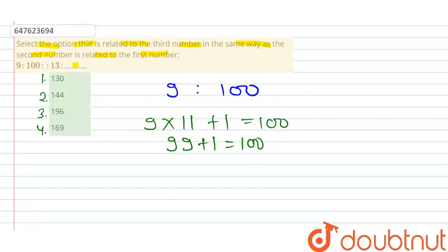Now, by this logic, the next number is 13. When we multiply 13 with 11 and add 1 to it, we will get 13 into 11 is 143, and add 1 to it is 144.